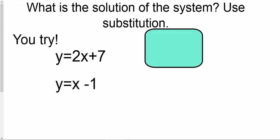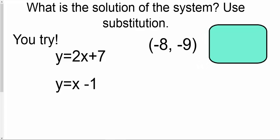For this one, they're both equal to y. I want you to pause the video here, try to solve this one by yourself, and when you're done, come back and be ready for the solution. The correct answer is negative 8 comma negative 9. If you got that, great, move on. If you didn't, stick around for me to explain it.